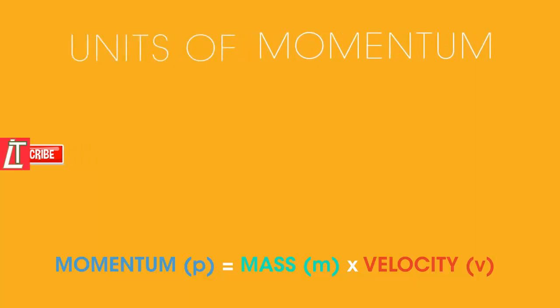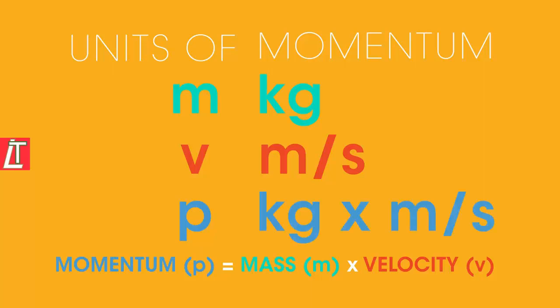So what are the units of momentum? Mass is measured in kilograms and velocity in meters per second. So momentum equals kilograms times meters per second.